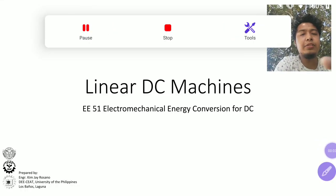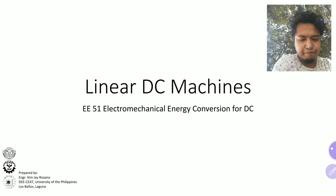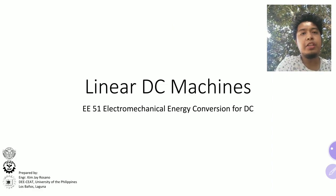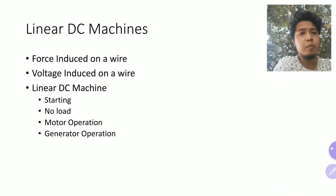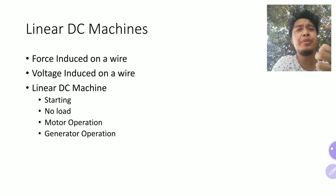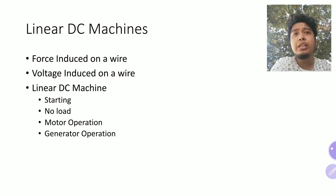Hello, today I'll be discussing linear DC machines. Basically, for you to easily understand how a DC machine works, the easiest way is to understand the operating principles behind linear DC machines. In this topic, which is relatively short, I'll be discussing how a force is induced on a certain length of wire, how voltage is induced in a certain length of wire, and then how a linear DC machine works.